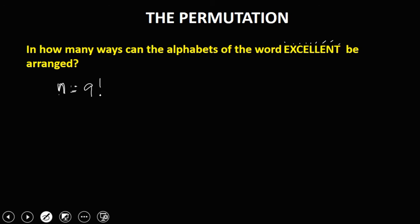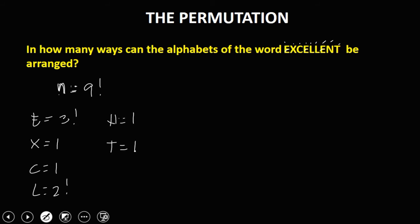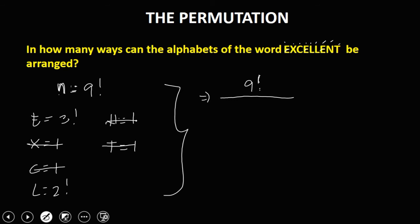For letter E, since we have 3 letter E's, this E is equal to 3 factorial. For X, that's 1. For C, that's 1. For L, this one is 2 factorial because we have 2 letter L's. For N, that's 1, and for T, also equal to 1. So to solve, we have 9 factorial over 3 factorial times 2 factorial, dropping the 1s.